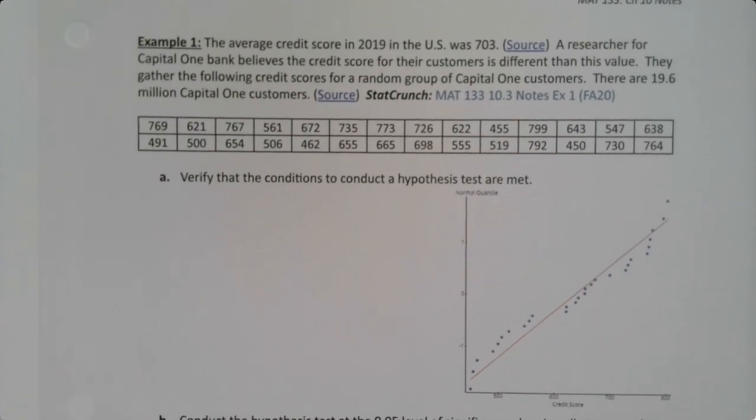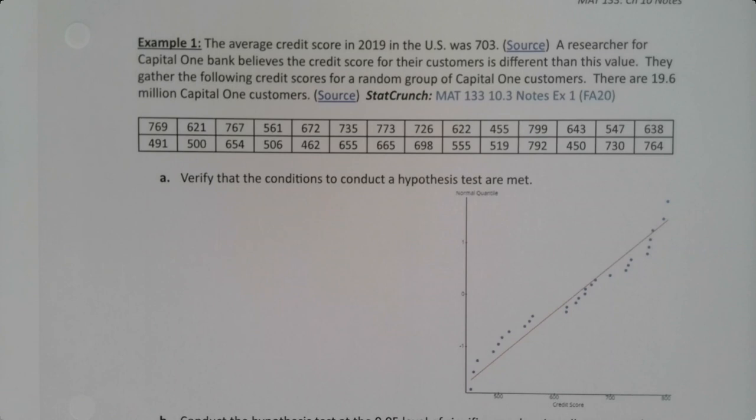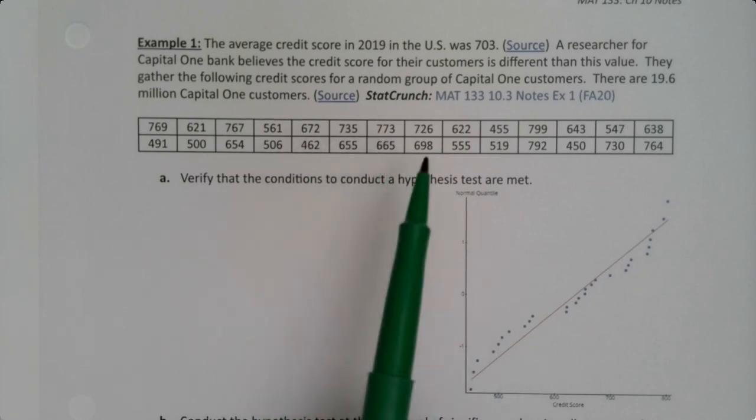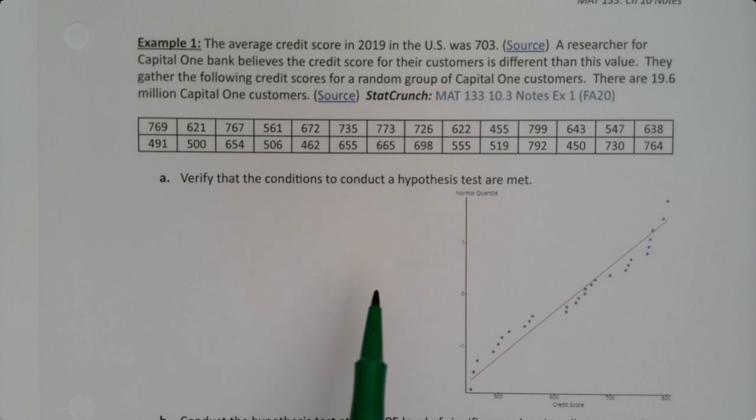We have the average credit score in 2019 in the US was 703. There's a source for that in case you're interested. A researcher for Capital One Bank believes the credit score for their customers is different than this value. They gather the following credit scores for a random group of Capital One customers. There are 19.6 million Capital One customers. It's a very large bank. So this data set is actually available online so we can use that to answer these questions down below.